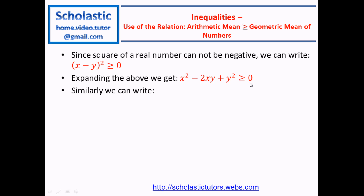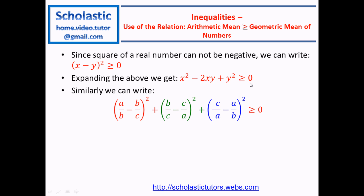Now we can write a similar expression for this set of three numbers. Basically, when you take a difference between these two numbers and square it, it should be greater than 0. Therefore, this term and this term are also greater than 0. When you add them, it can be greater than or equal to 0. So we can treat each as an X minus Y squared — this is a positive number, or it can be 0.